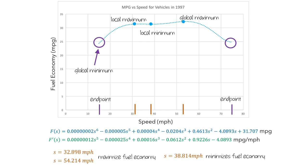To wrap things up, we need to actually compute and report the actual fuel economy values for the global min and max. We can plug the speed of 15 miles per hour into our formula to get that the minimum fuel economy is 24.4 miles per gallon, and plugging in, the maximum fuel economy is 32.305 miles per gallon.